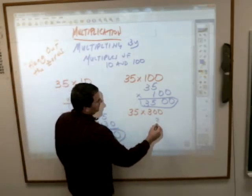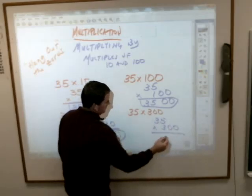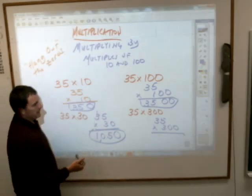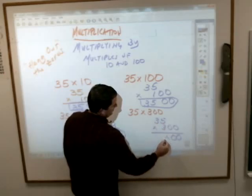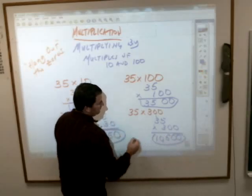And this one over here, you can probably guess what you're going to get. Can you guess what you're going to get with this one? Ryan? 10,500. Exactly. You'll drop your two zeros down. 5 times 3 is still 15, 3 times 3 is 9 plus 1 is 10. 10,500.